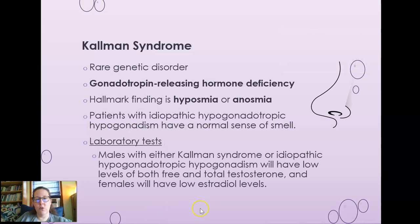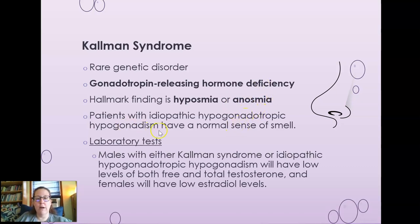Kallmann syndrome is a rare genetic disorder where there is gonadotropin-releasing hormone deficiency at the hypothalamus level. A hallmark finding is hyposmia or anosmia — a lack or very low sense of smell — because the brain region that interprets smell and the hypothalamic region develop at the same time and both are impacted. Males with either Kallmann or idiopathic hypogonadotropic hypogonadism will have low free and total testosterone, and females will have low estradiol levels.